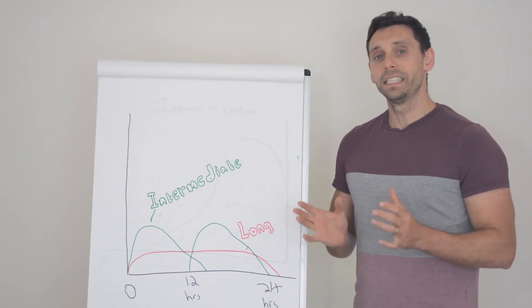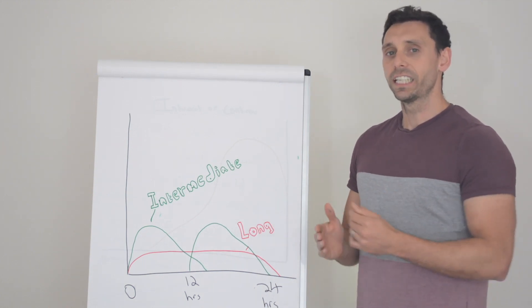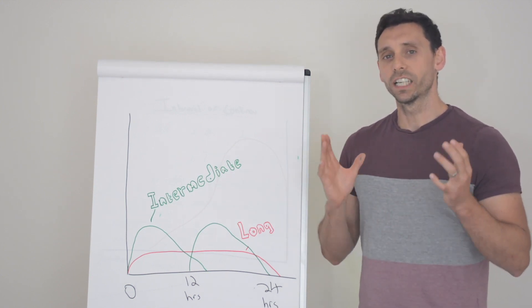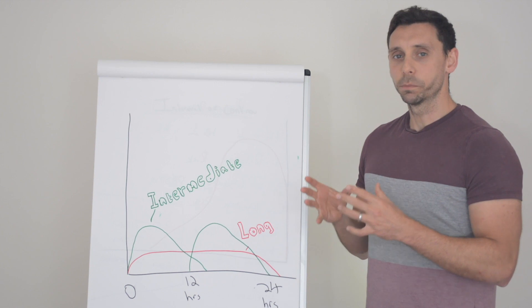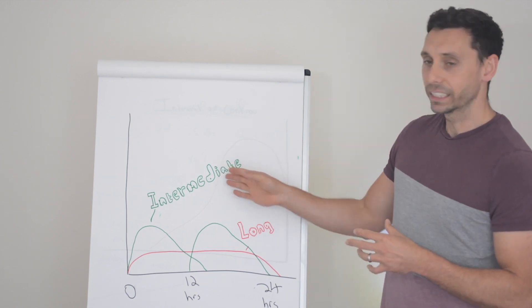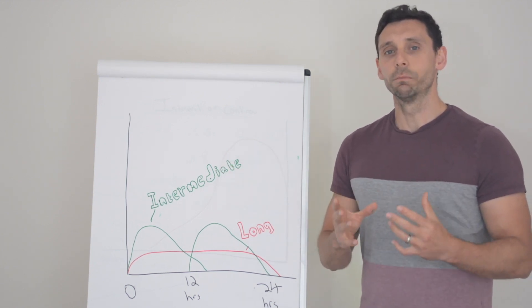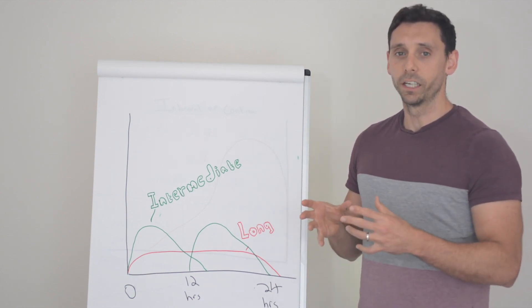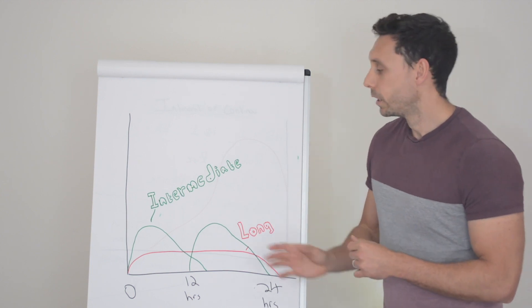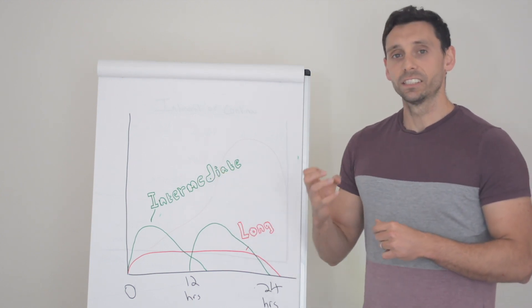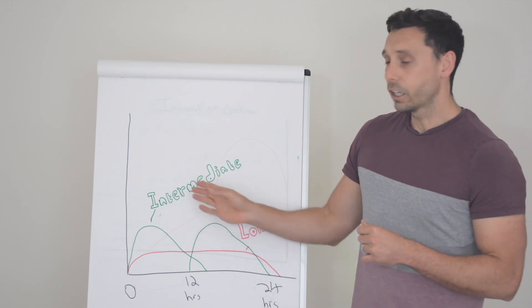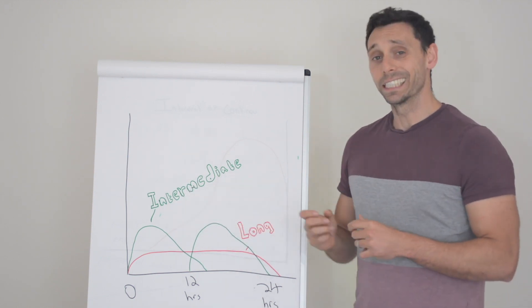The other good thing about intermediate acting insulins is they're kind of a step down from mixed insulins. Now we've done a video on mixed insulins as well, but just as a summary, that's two insulins put together. So you have intermediate acting insulins mixed with rapid insulins, which are there to help deal with food. Now these can really put you at risk of hypoglycemia if you don't know what you're doing with them. Whereas intermediate acting insulins do not have that rapid element. So you're less likely to hypo by taking an intermediate acting insulin.